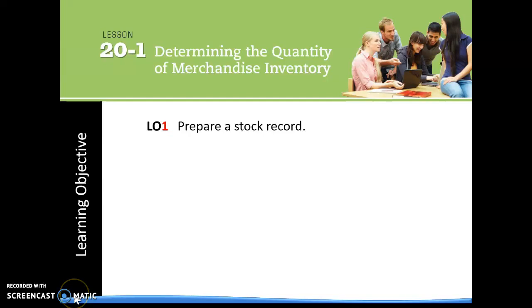Chapter 20. Section 20-1 is talking about determining the quantity of merchandise inventory. Our first learning objective is you need to be able to prepare a stock record.